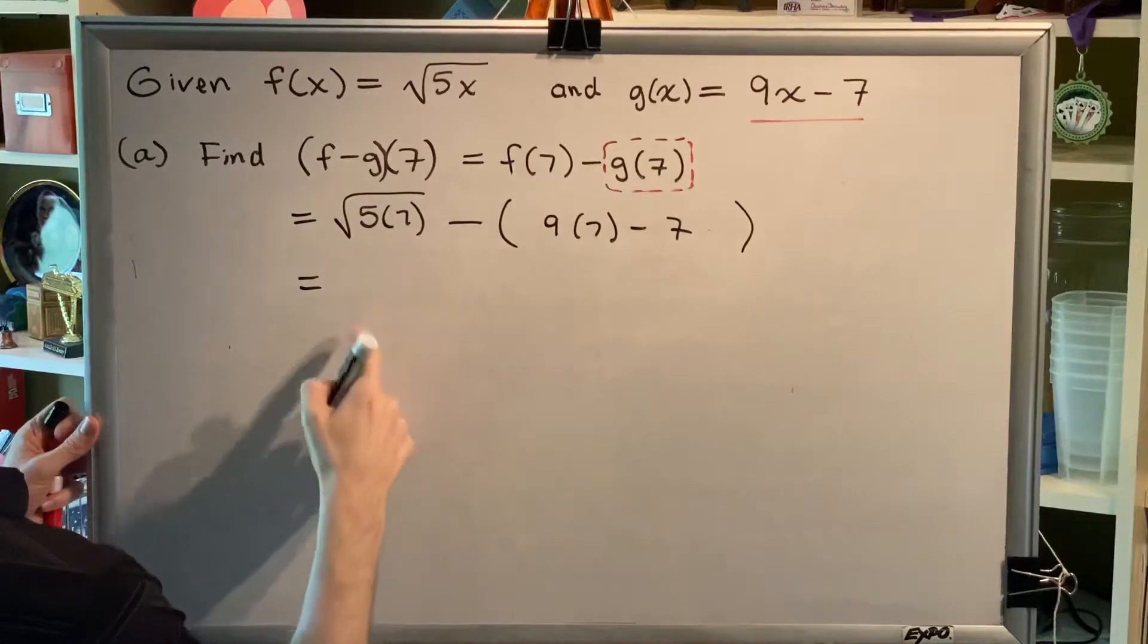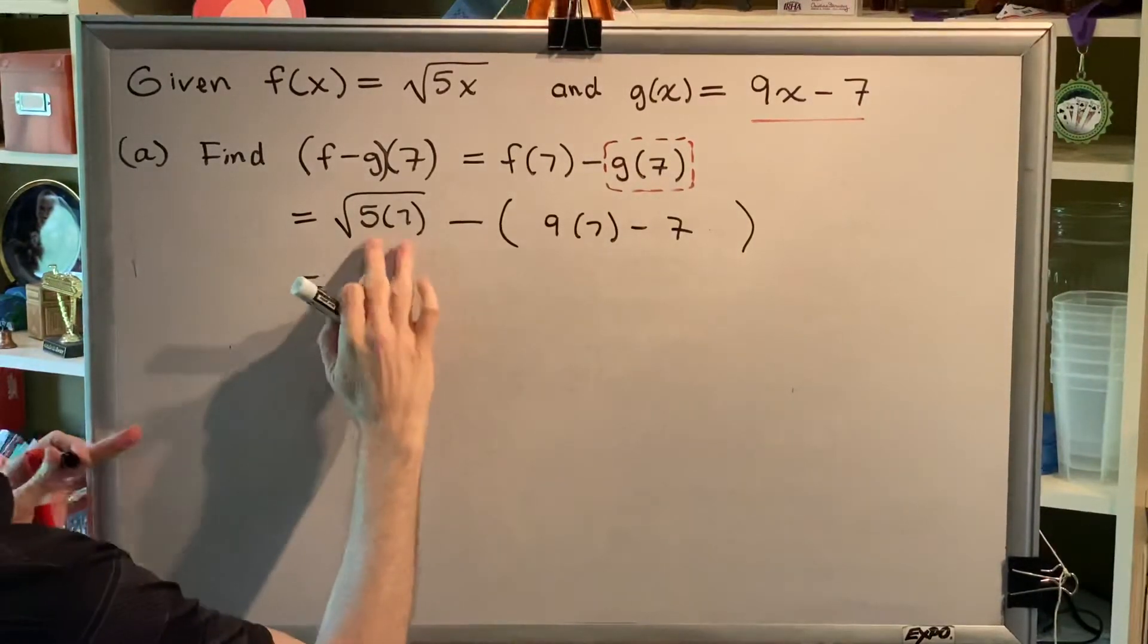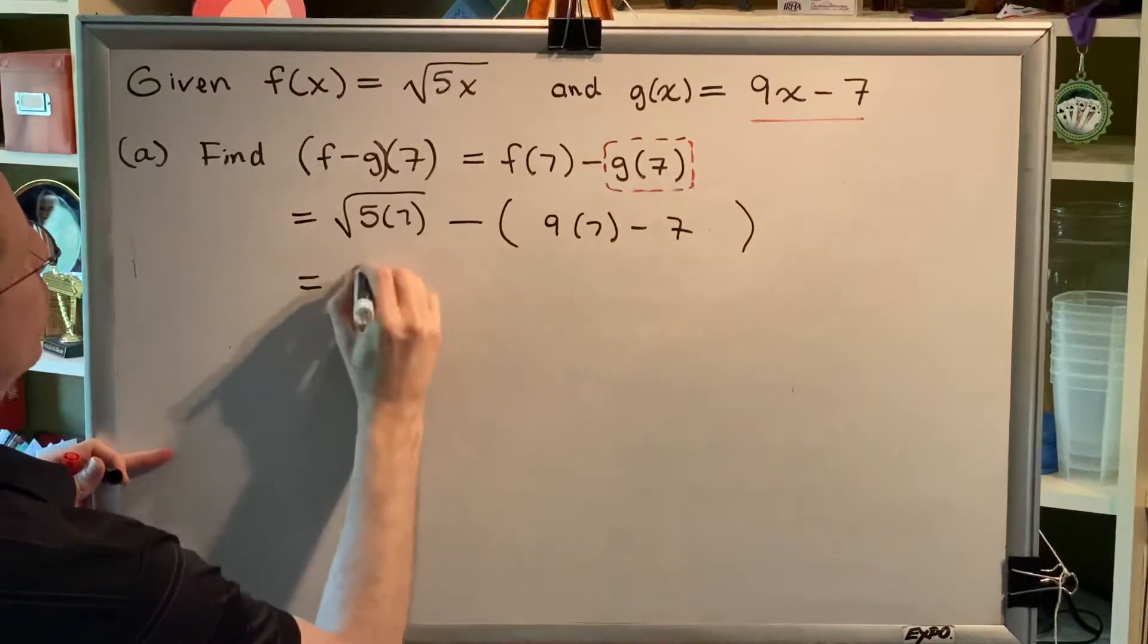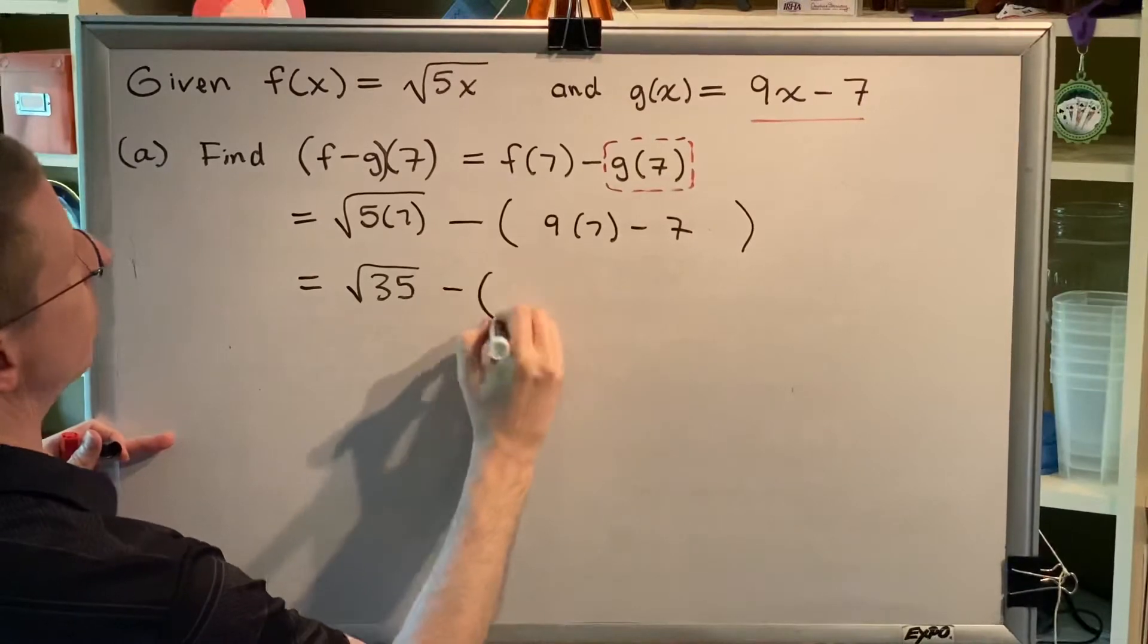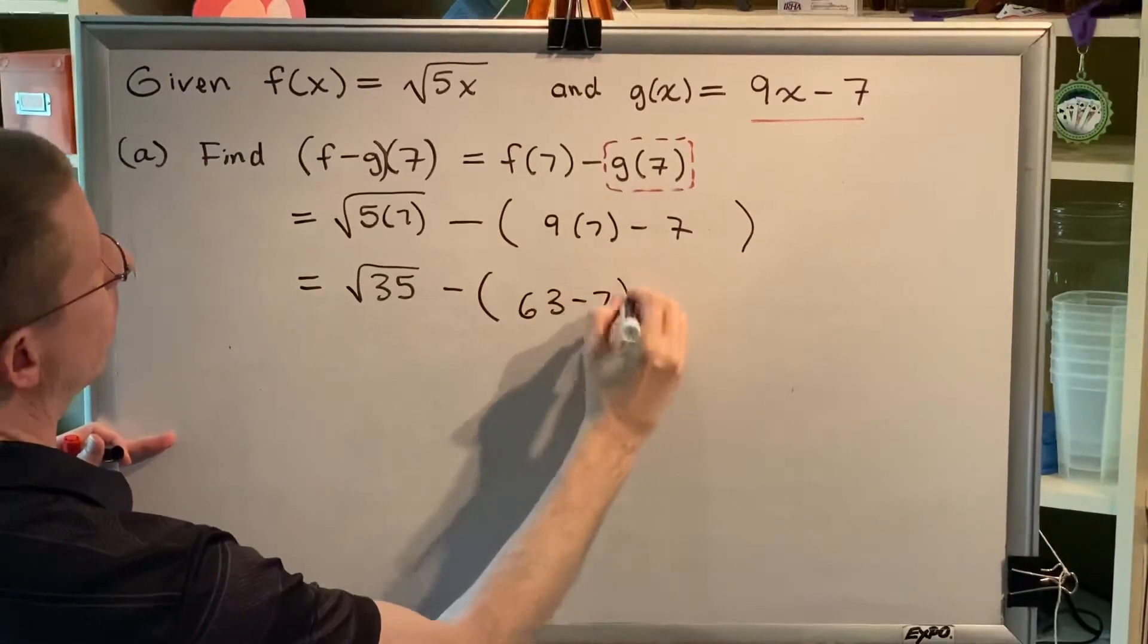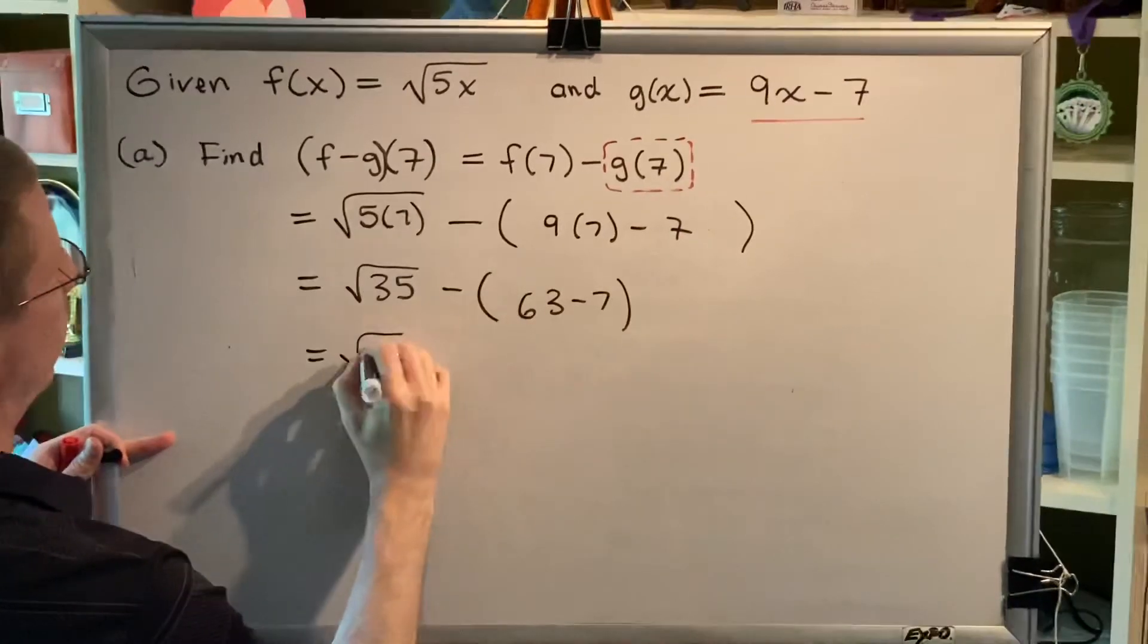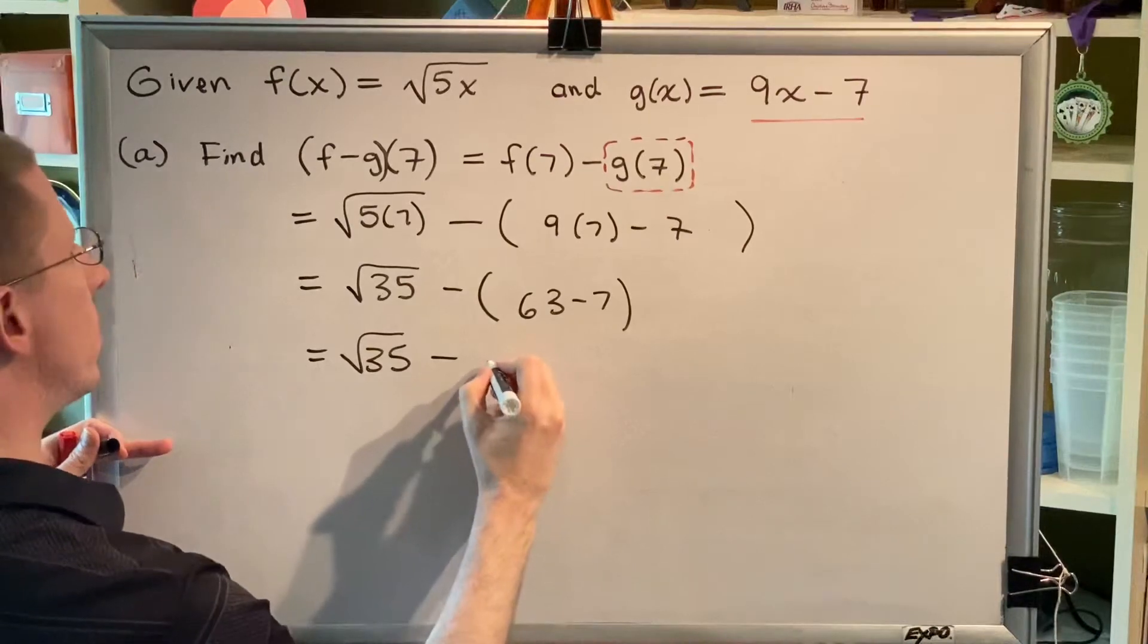Alright, now we're going to simplify. So, 5 times 7, those are both prime numbers, which means we cannot simplify this radical, so we're just going to multiply that and write that as the square root of 35 minus parentheses. 9 times 7 is 63. 63 minus 7 is 56.